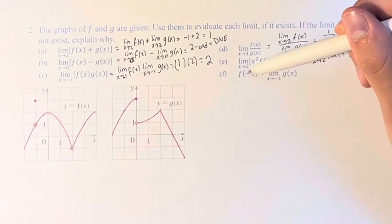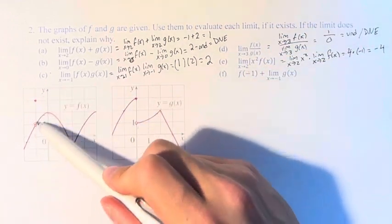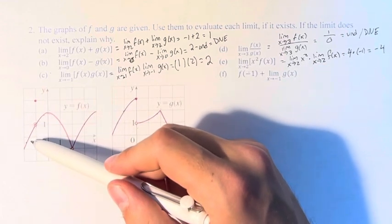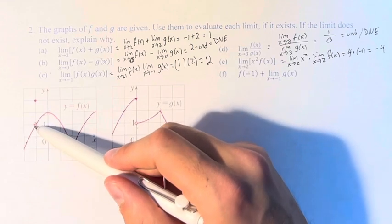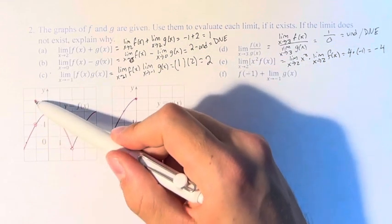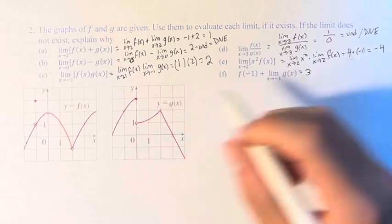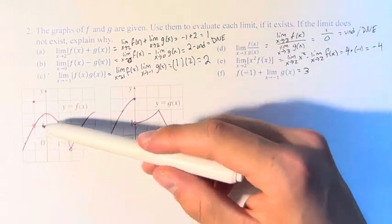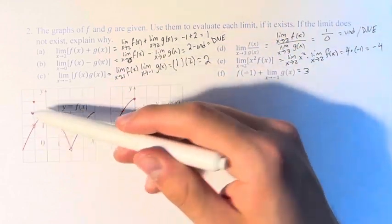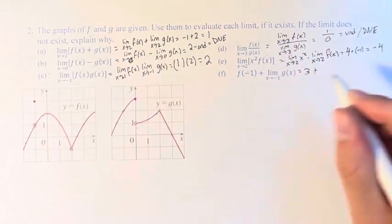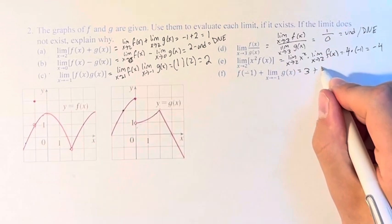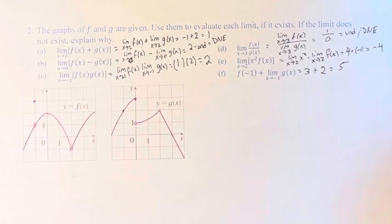Finally, in part f, we have f(negative 1). This is not the same as the value the function is approaching as x approaches negative 1 — it's instead this point up here with a value of 3. For most points on this function, the value of the function equals the value which the function approaches, but this is one case where it does not. So it's 3, plus the limit as x approaches negative 1 of g(x), which we already found at that point right here with a value of 2. 3 plus 2 is 5.